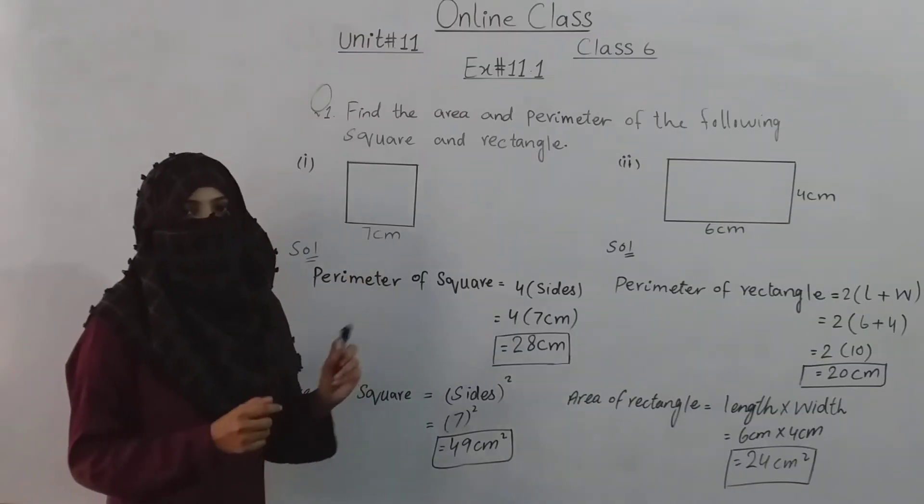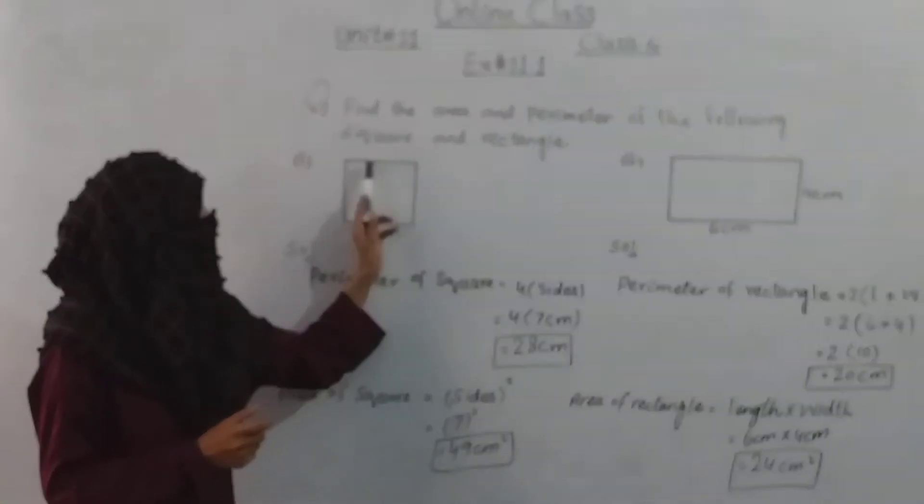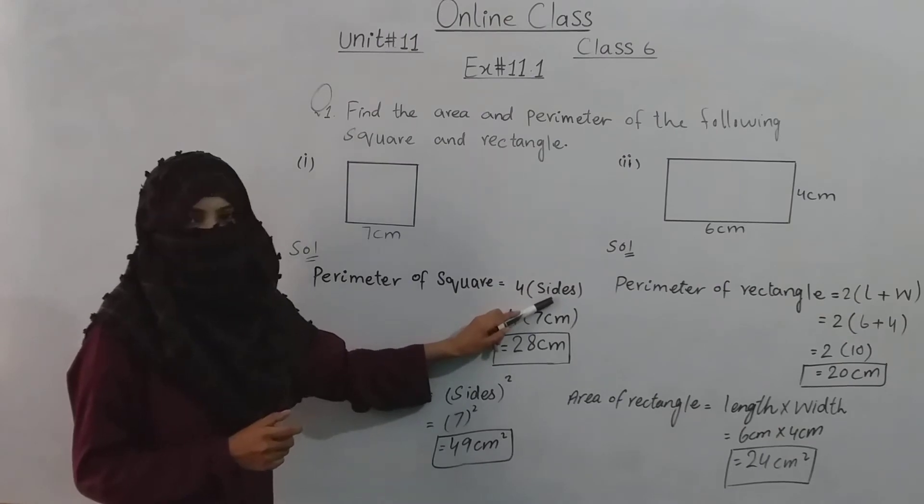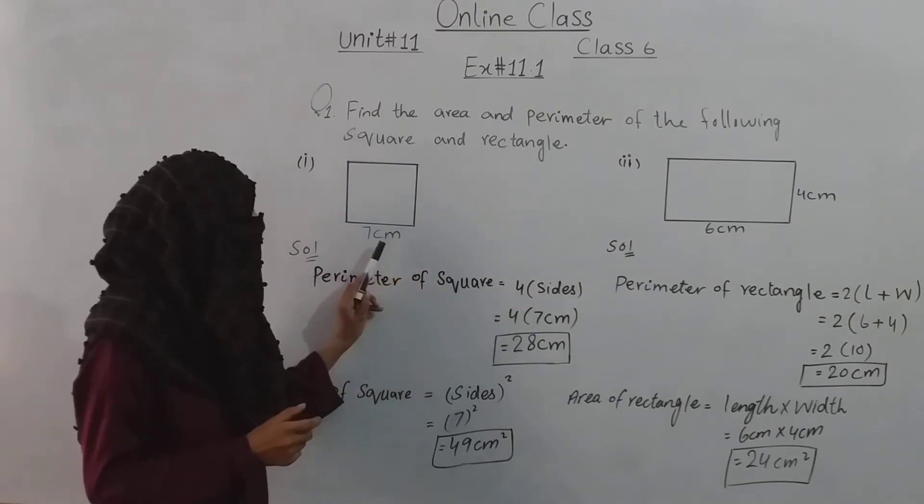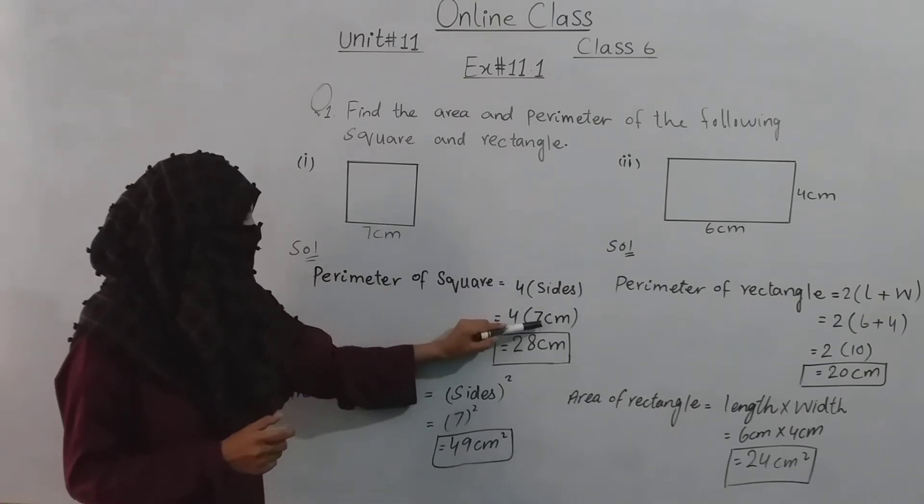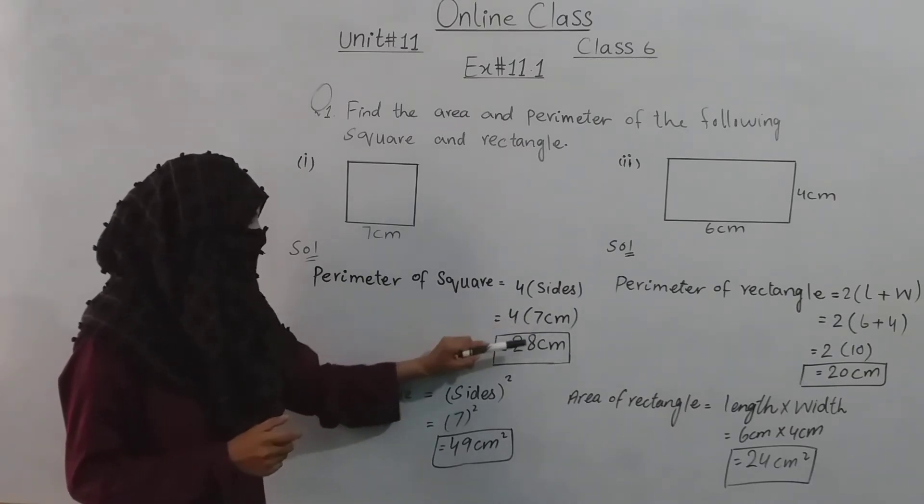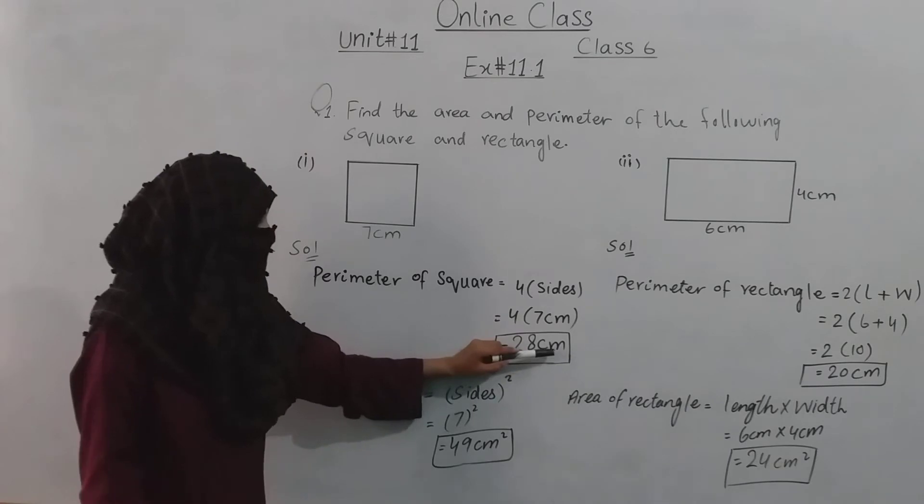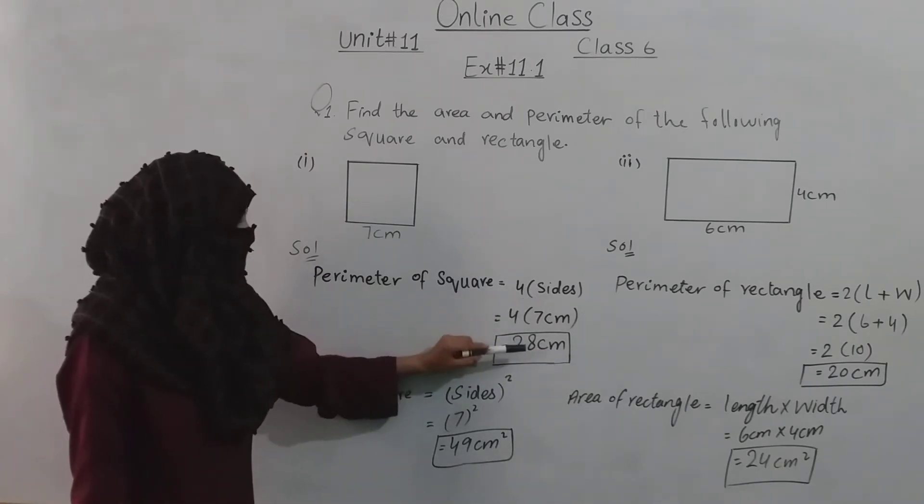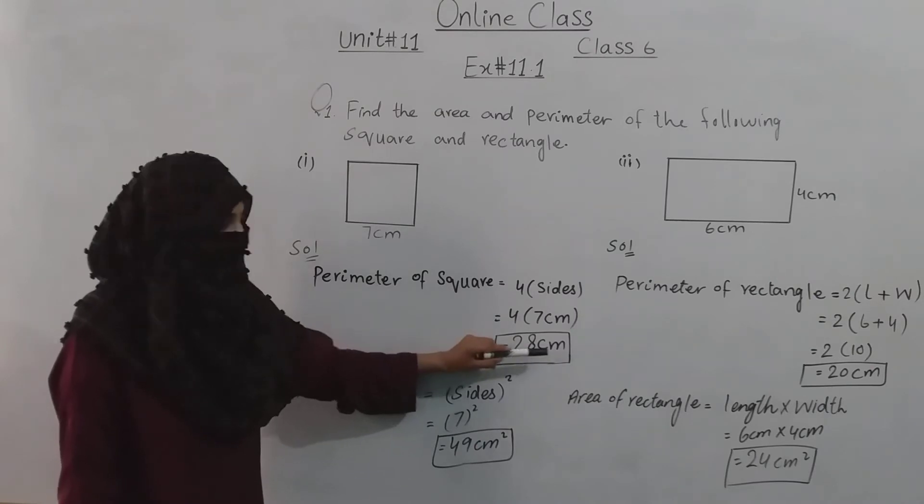Since the square has four equal sides, we will multiply four by the given side length. Four multiply by seven equals twenty eight. So the perimeter of the square equals twenty eight centimeters.